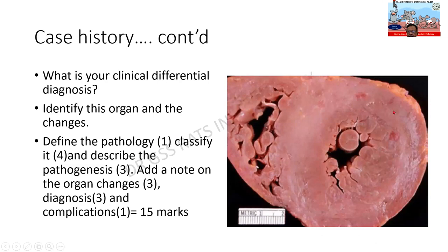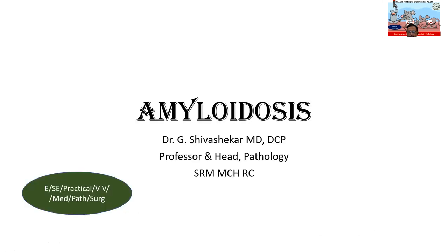All of us know that this is the heart, but there is a massive enlargement of the left ventricle. Moreover, it appears much paler than the beefy brown or red color that the heart usually has. So our diagnosis should be amyloidosis. This question has been haunting us as students for the past 50 years and shall continue to do so in future. The importance of it cuts across various subjects, and it is a difficult diagnosis to make.